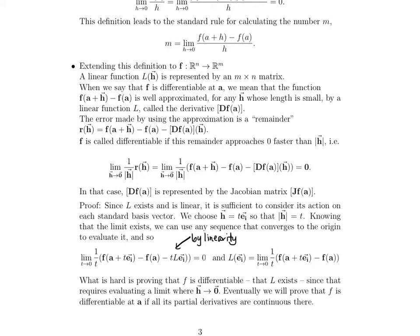So, how do we get from here to here? Well, all we're doing is taking this T, canceling it with this one over here, and moving this onto the other side of this statement. So, all we've done is cancel the T on this term, and then solve for L of E sub i. So, what is hard is proving that F is differentiable, or that this L even exists. This entire process, as I said, already assumes that it exists. We're just showing what it is. And so, eventually, we'll prove that F is differentiable at a if all of its partial derivatives are continuous there.